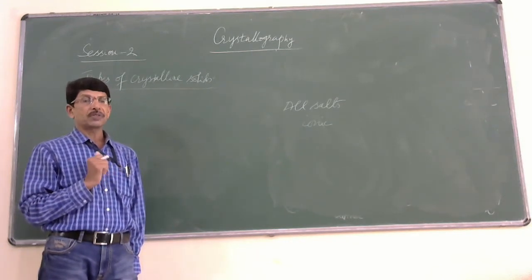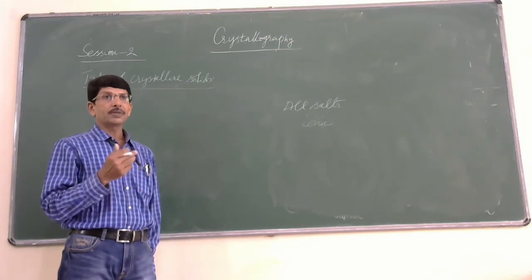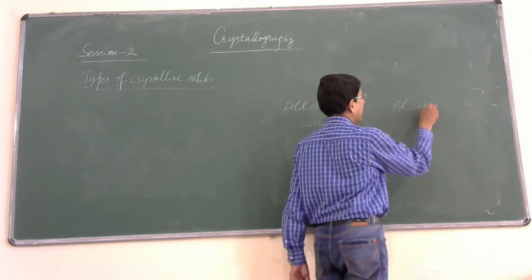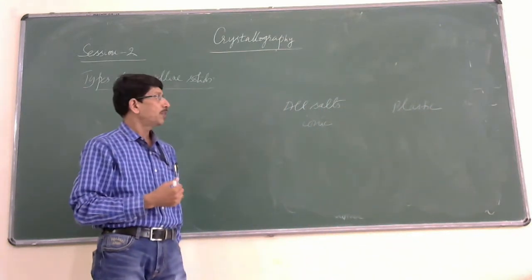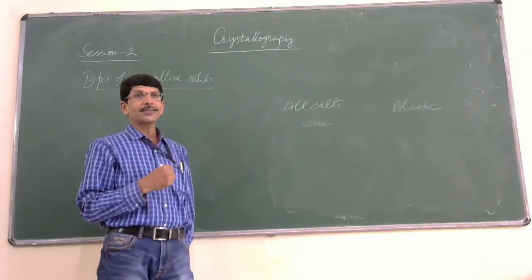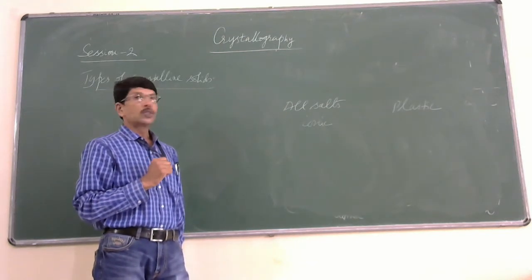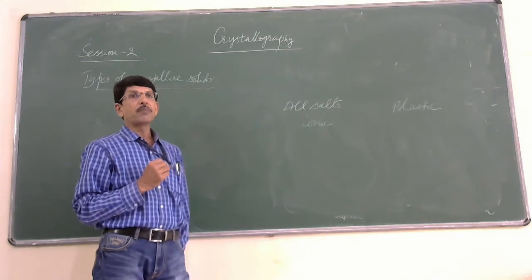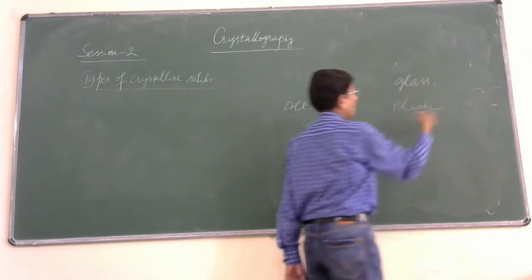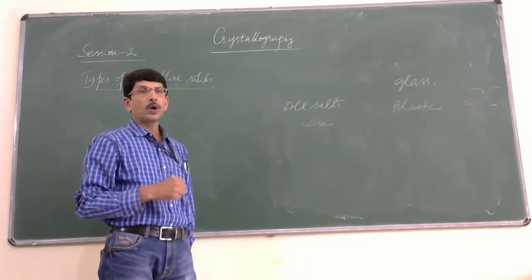When it comes to amorphous solids, all polymer substances and glass are examples. Polymers — you are studying about polymers. You name any plastic, it is an example of a polymer. Glass is also an example of amorphous solids; it is called a supercooled liquid. So all polymers, whether thermoset plastic or thermoplastic, are examples of amorphous solids.